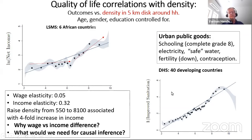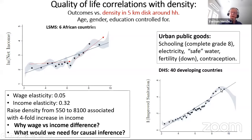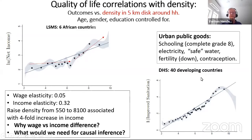This is data on improved sanitation — a UN development goal. Improved sanitation is not sewers; it's a pretty low bar. There's a dramatic improvement as you increase density. This covers 40 developing countries: sub-Saharan Africa, South Asia, some Southeast Asia, some Latin America. Density is measured by taking the centroid of a household cluster and drawing a five-kilometer radius around it.